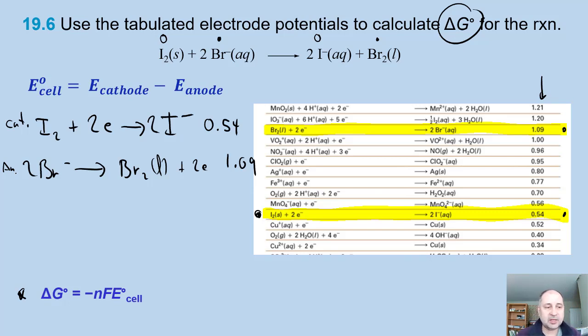The electron potential there is 1.09 volts, that's the anode. We can calculate E°cell by taking the value of the cathode, 0.54 minus the anode, 1.09, which is equal to... sorry that's incorrect, it's negative 0.55 volts.